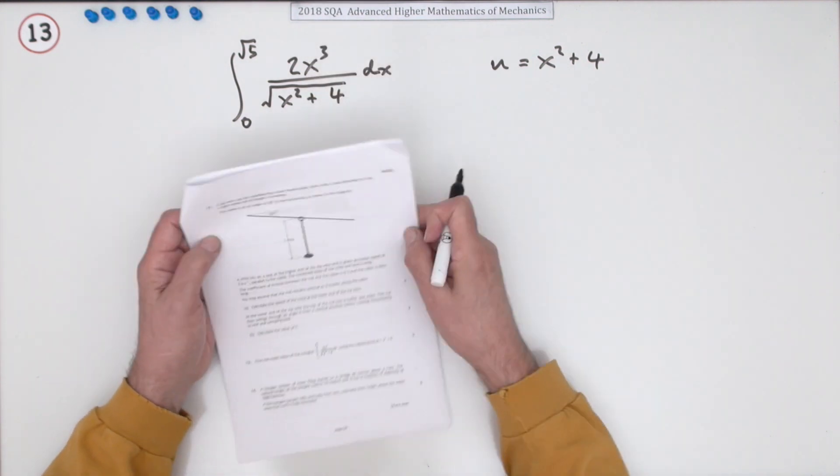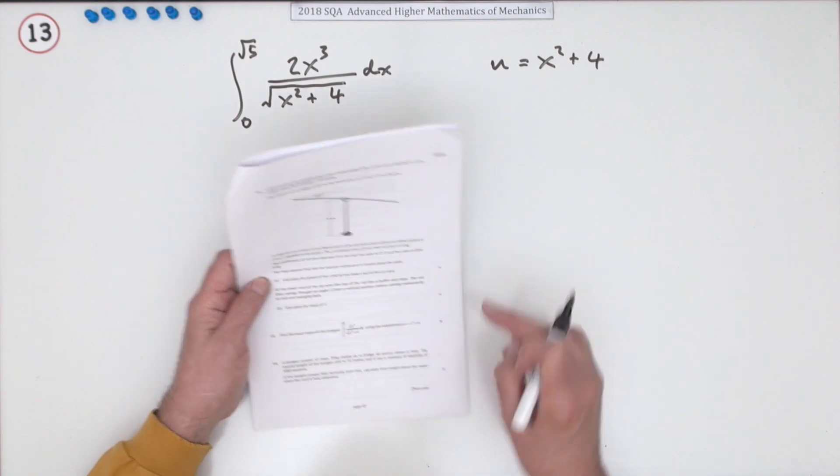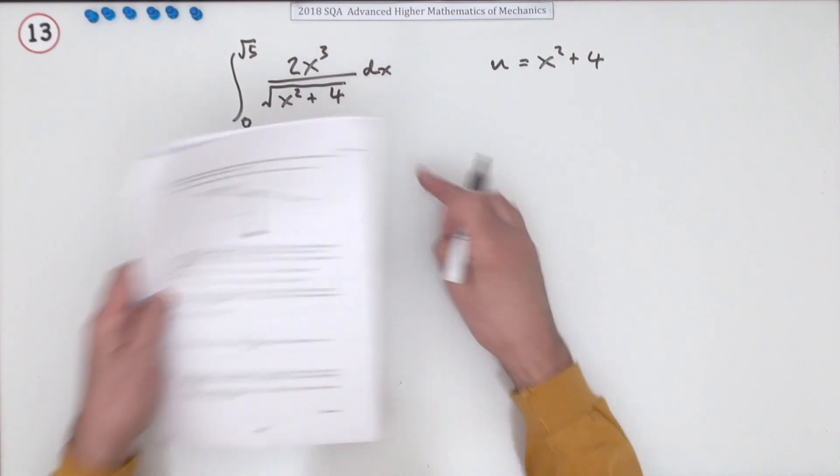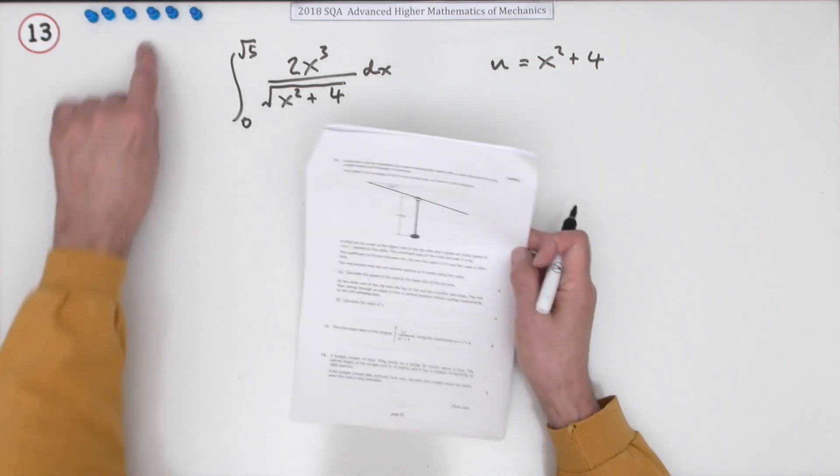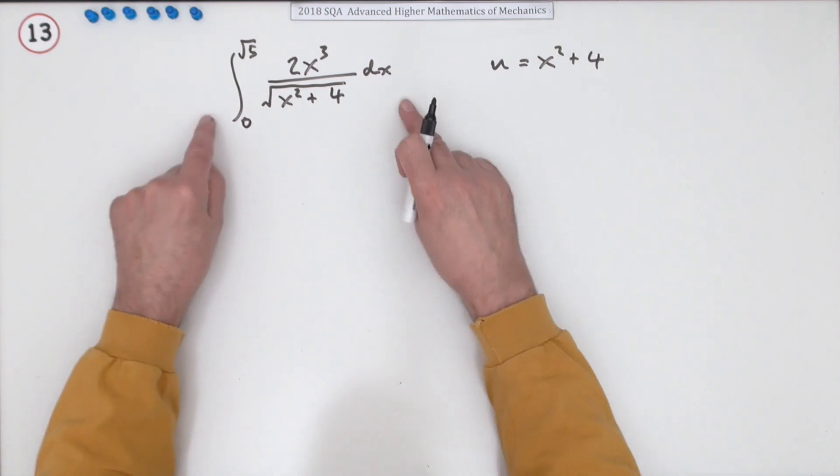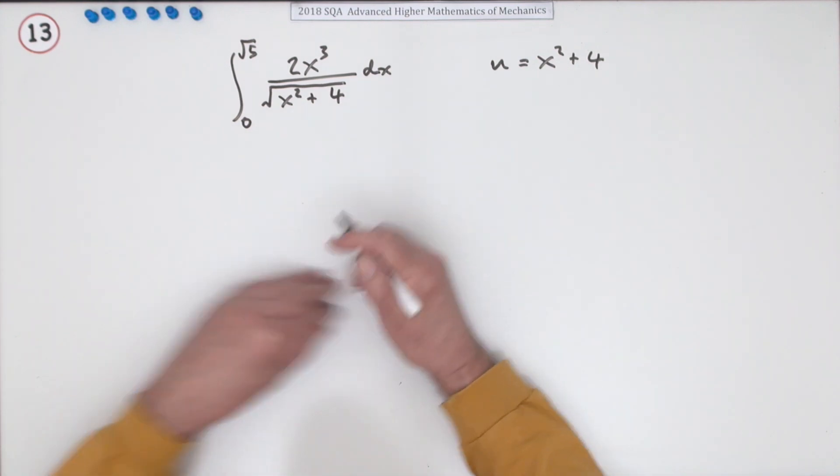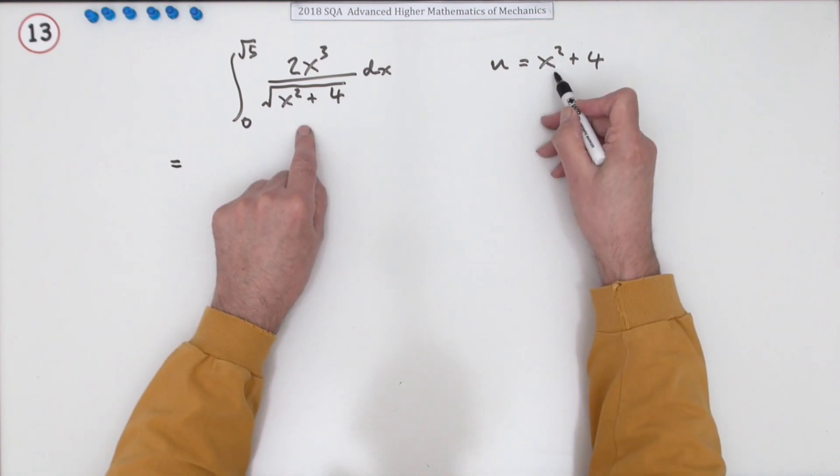Number 13, from the 2018 SQA Advanced Higher Mathematics and Mechanics. A bit of a break from the mechanics paper—just a purely mathematical question. For six marks, we need to carry out this definite integral using this substitution.